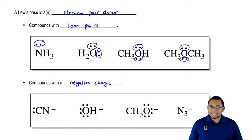Again, remember, a Lewis acid is an electron pair acceptor. A Lewis base is an electron pair donor.